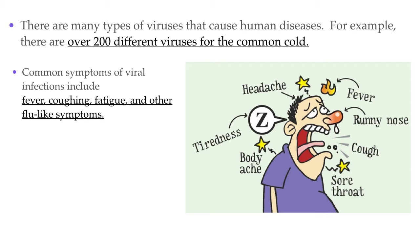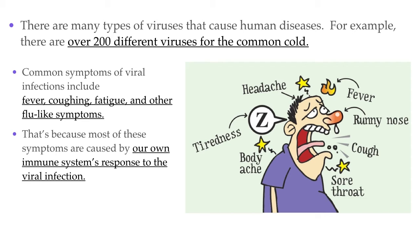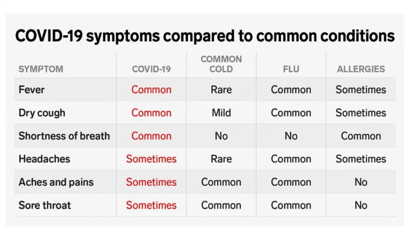This can become confusing, especially during a pandemic, when if we get some symptoms we cannot be sure of the cause. The reason for these common symptoms is that they are caused by our own immune system's response to a viral infection. So whether we have allergies, are fighting a cold, caught the flu, or actually have COVID-19, we can sometimes be unsure based solely on the symptoms. However, there are some symptoms more commonly associated with some viruses than others.